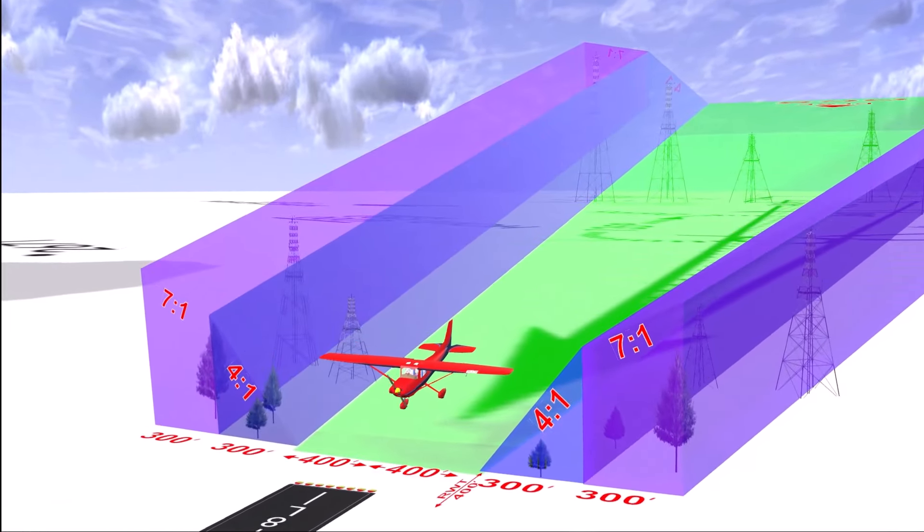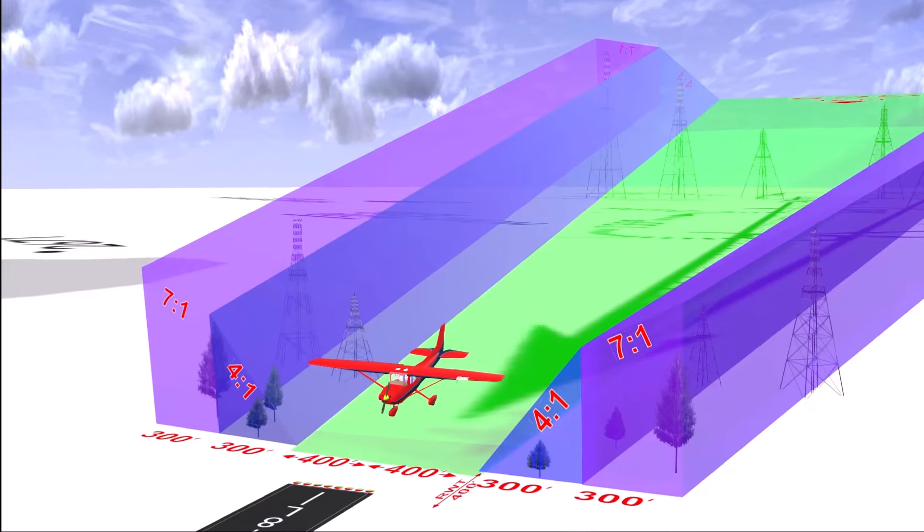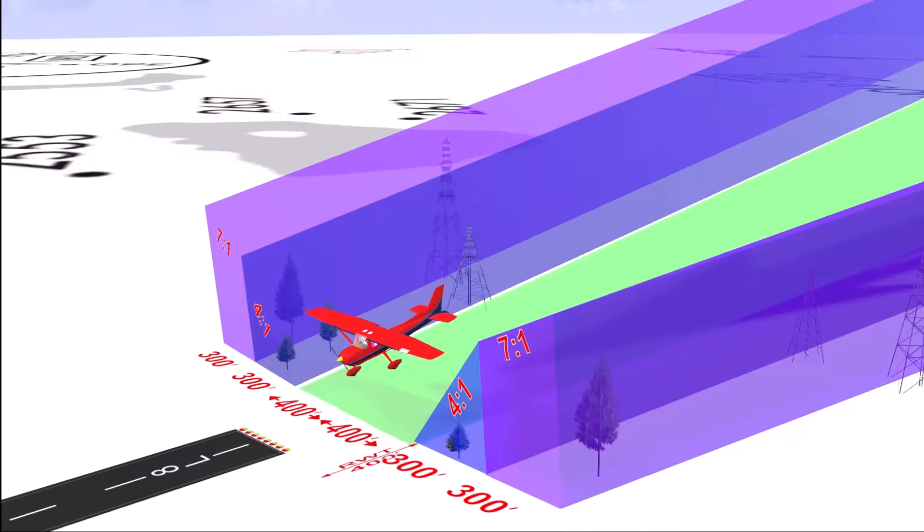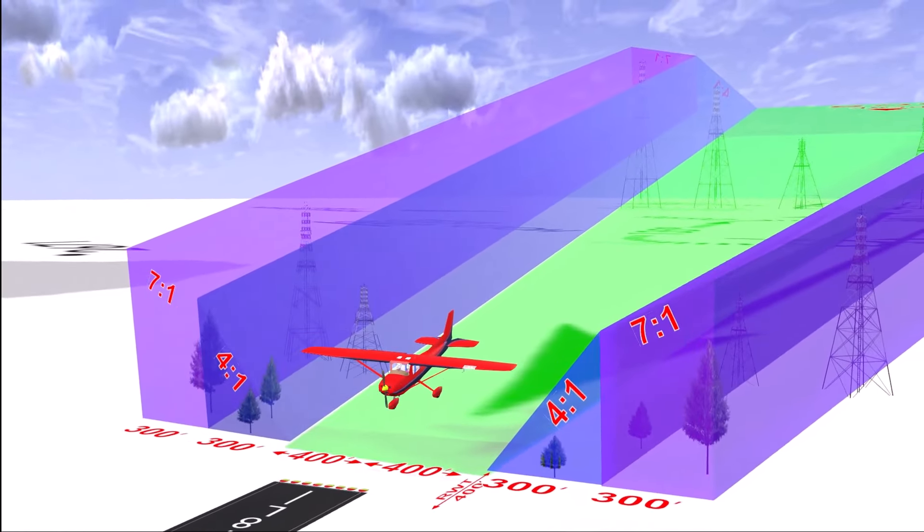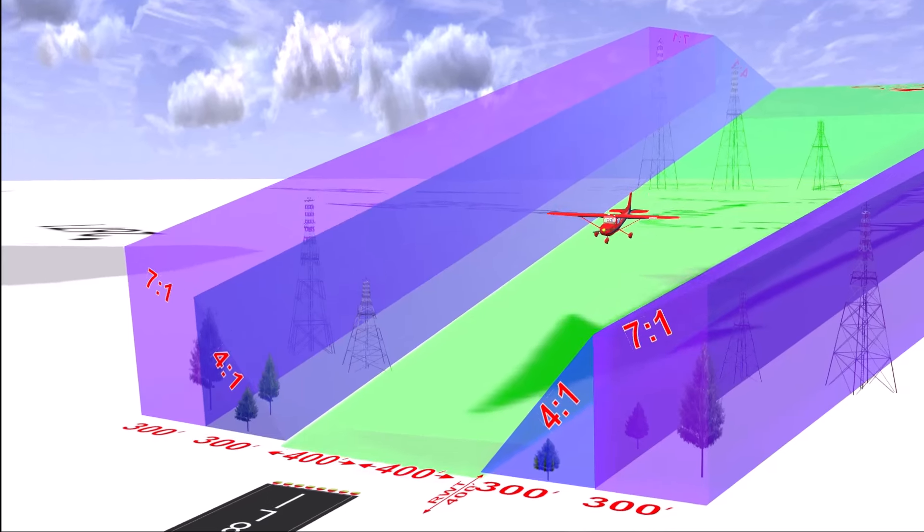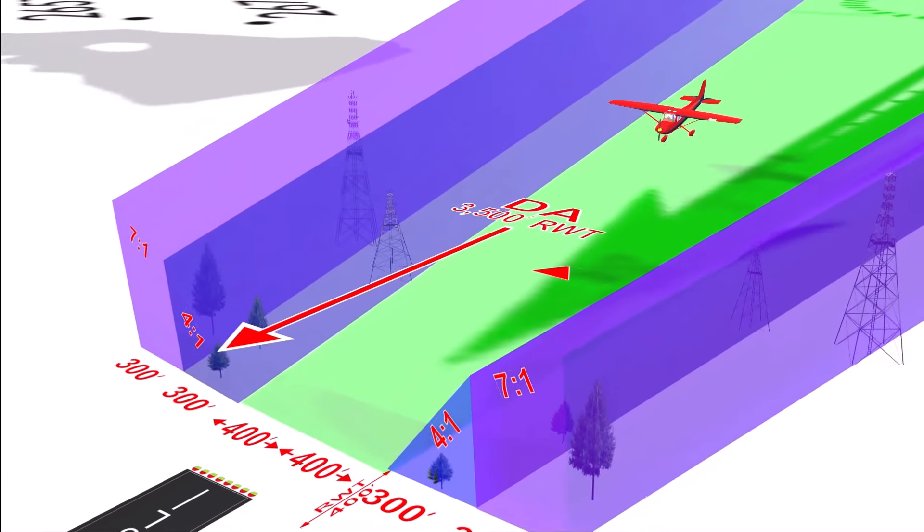Anywhere below the green colored obstacle clearance surface and the 4 to 1 and 7 to 1 sloping surfaces, obstacle protection is not guaranteed. This is all the more reason that you should maintain course centerline on any approach, especially precision approaches.